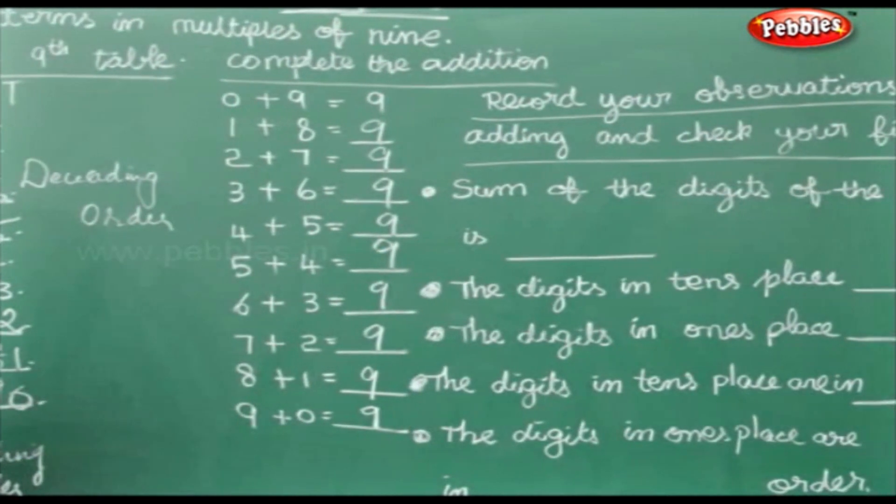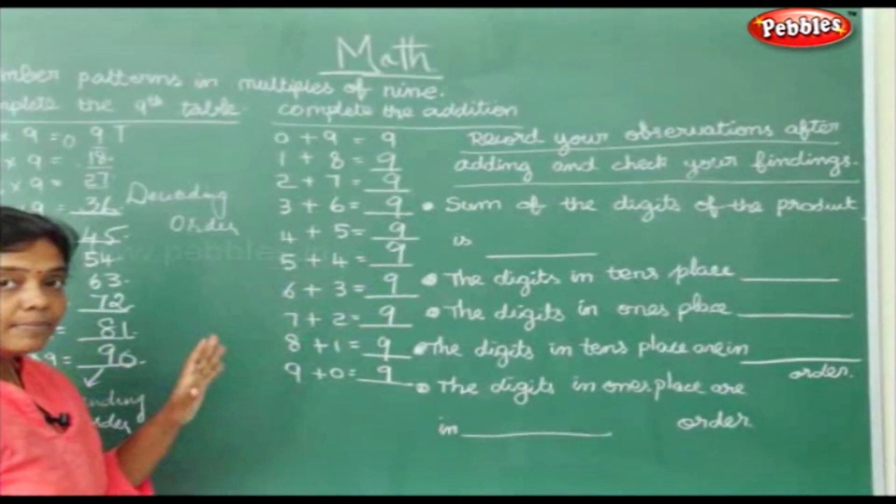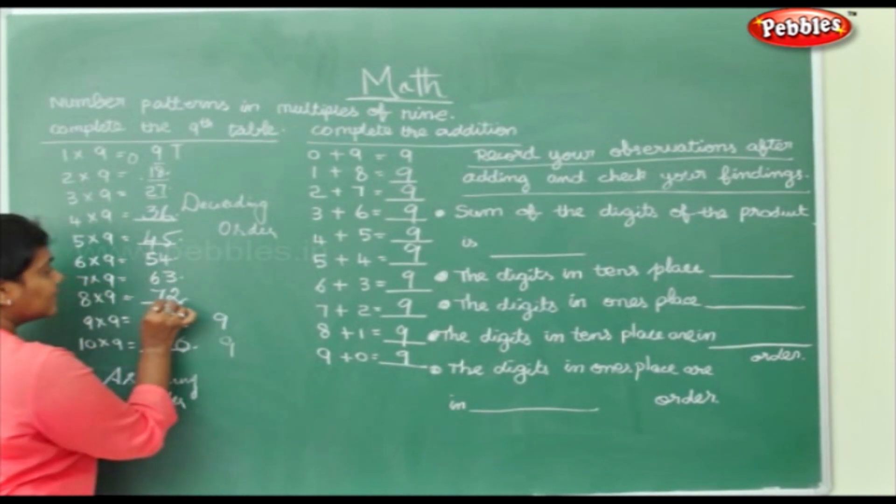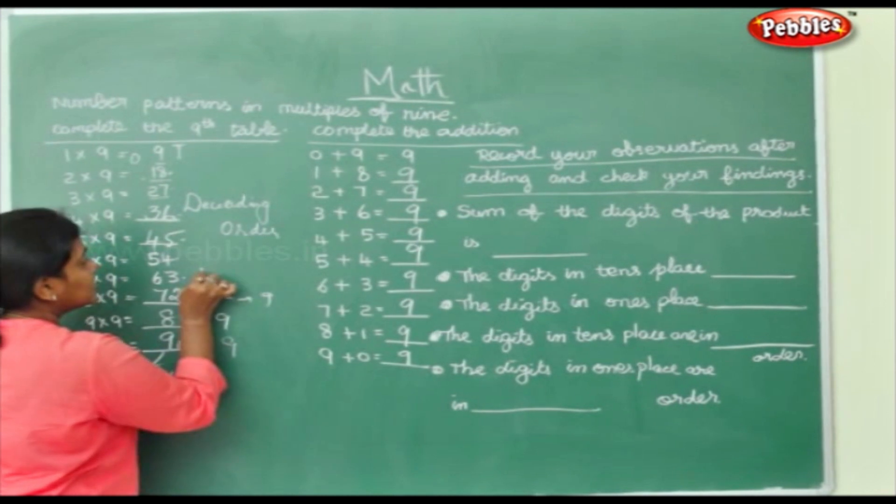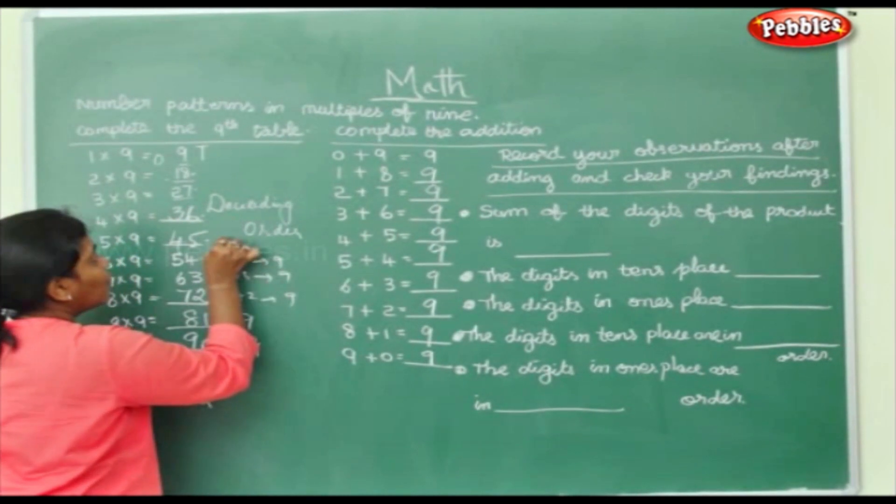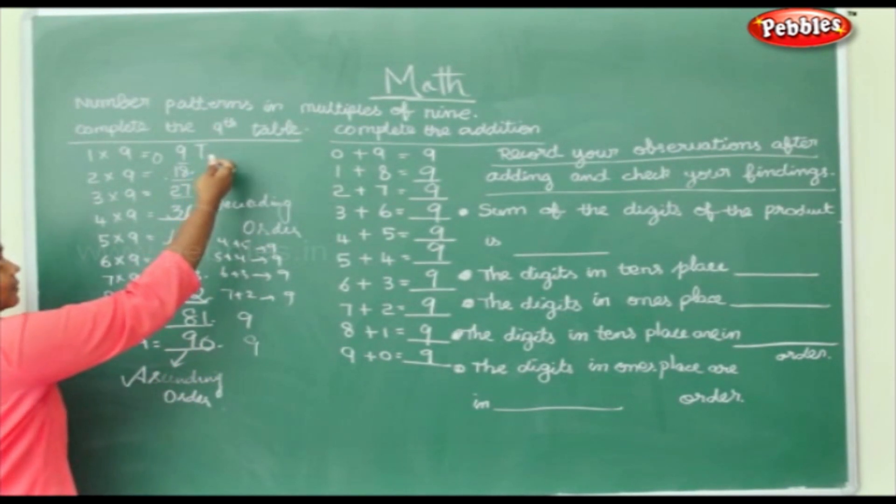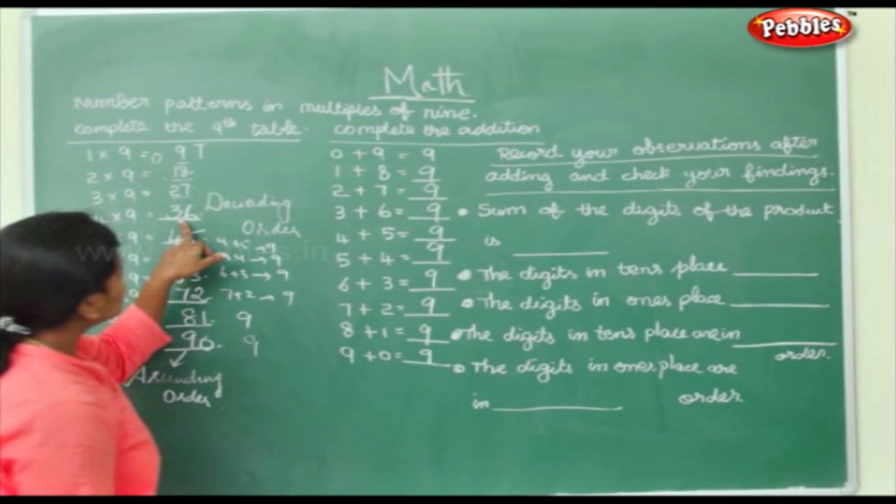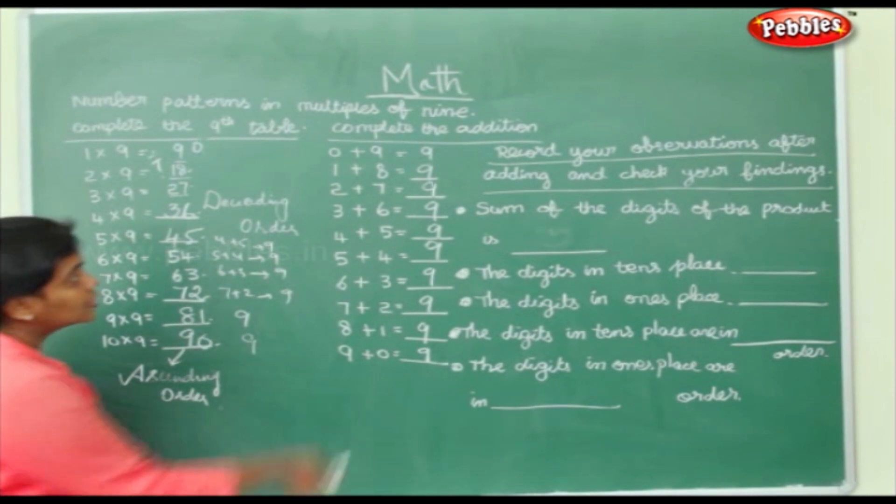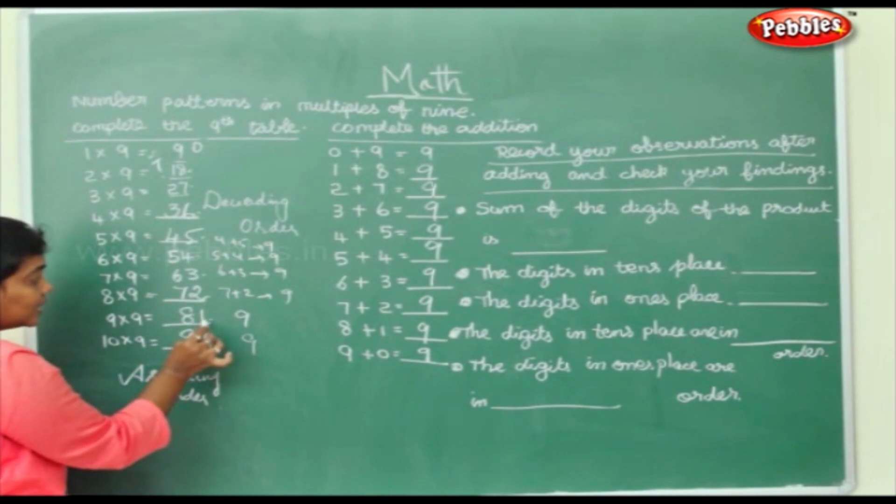Now record the observation after adding and check your findings. The sum of the digit of the product. So this is your product, right? They have asked for the sum. Sum means you have to add the product. 9 plus 0 is 9, 8 plus 1 is 9, 7 plus 2 is 9, 6 plus 3 is 9, 5 plus 4 is 9, 4 plus 5 is 9, 3 plus 6 will be 9, 7 plus 2 will be 9, 1 plus 8 will be 9. These are your products: 18, 27, 36, 45, 54, 63, 72, 81, 90.